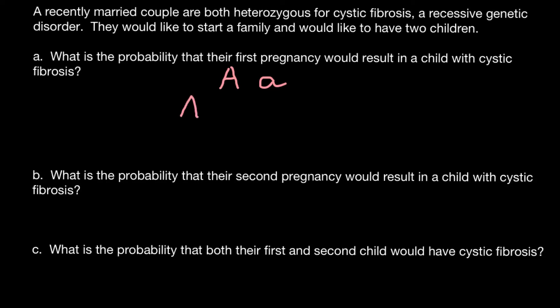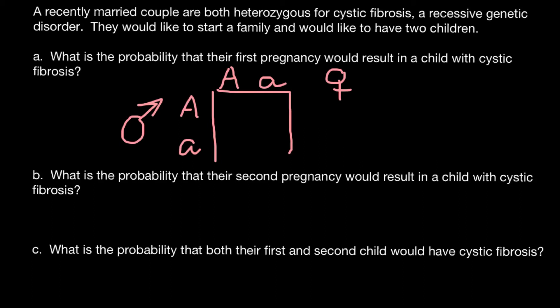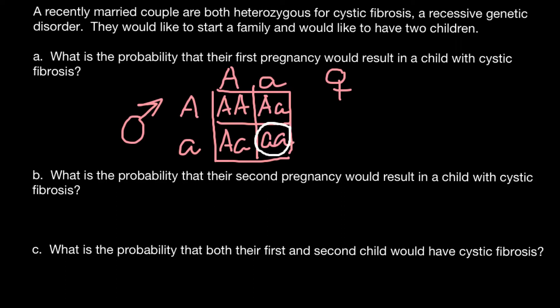The second parent would also be heterozygous. This can be the male, for example, and the other side can be female. When we build the Punnett square we can find the frequencies and genotypes of the progeny. So here we would have capital A capital A, here we would have capital A small a, capital A and small a here, and small a small a here. This genotype — small a small a — would result in the genetic disorder cystic fibrosis, and three out of four would be phenotypically normal.